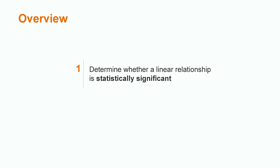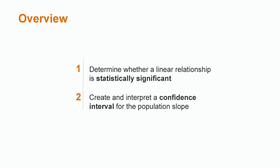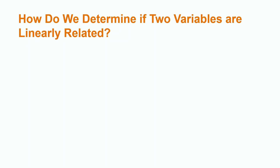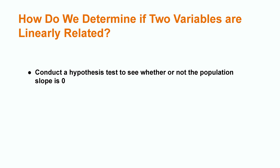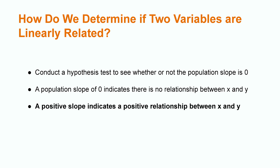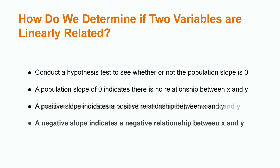I will also walk us through how to create and interpret confidence intervals for the population slope. In order to determine if two variables are linearly related, we need to conduct a hypothesis test to see whether or not the population slope is zero. A population slope of zero indicates that there is no relationship between x and y, meaning that when our x value increases or decreases, our value of y does not change. A positive slope indicates a positive relationship between x and y, and a negative slope indicates a negative relationship between x and y.